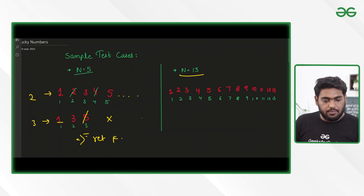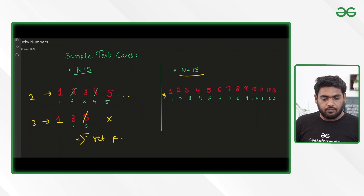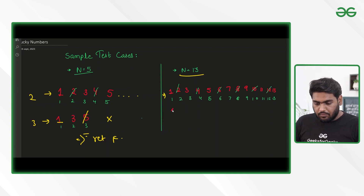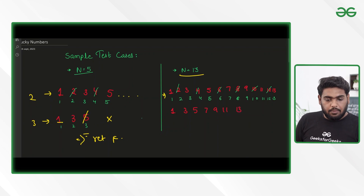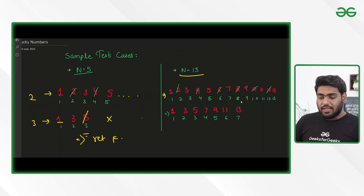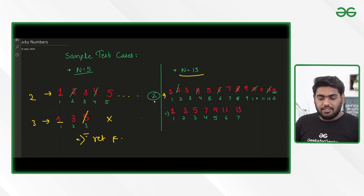Let's take the case of 13. We have written numbers up till 13. In the very first pass, we cancel every second number. After this, we are reduced to the set: 1, 3, 5, 7, 9, 11, and 13. Let me write down the indexes. We have to check for 13. In the first pass, 13 was intact — it wasn't cancelled. So it is safe from here.